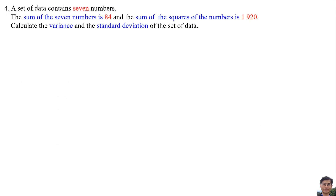Question 4: A set of data contains 7 numbers. The sum of the 7 numbers is 84, and the sum of the squares of the numbers is 1920. Calculate the variance and the standard deviation of the set of data.